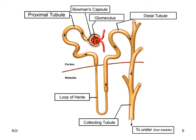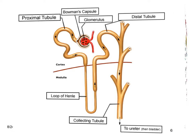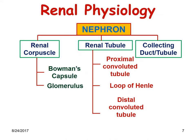The glomerulus is made up of capillaries and is called the glomerular capillary network. To summarize, the nephron is made up of the renal corpuscle, renal tubule, and the collecting duct. The renal corpuscle is made up of the Bowman's capsule and the glomerulus. The renal tubule consists of the proximal convoluted tubule, the loop of Henle, and the distal convoluted tubule — all emptying into the collecting duct, from there to the ureter and then into the bladder.